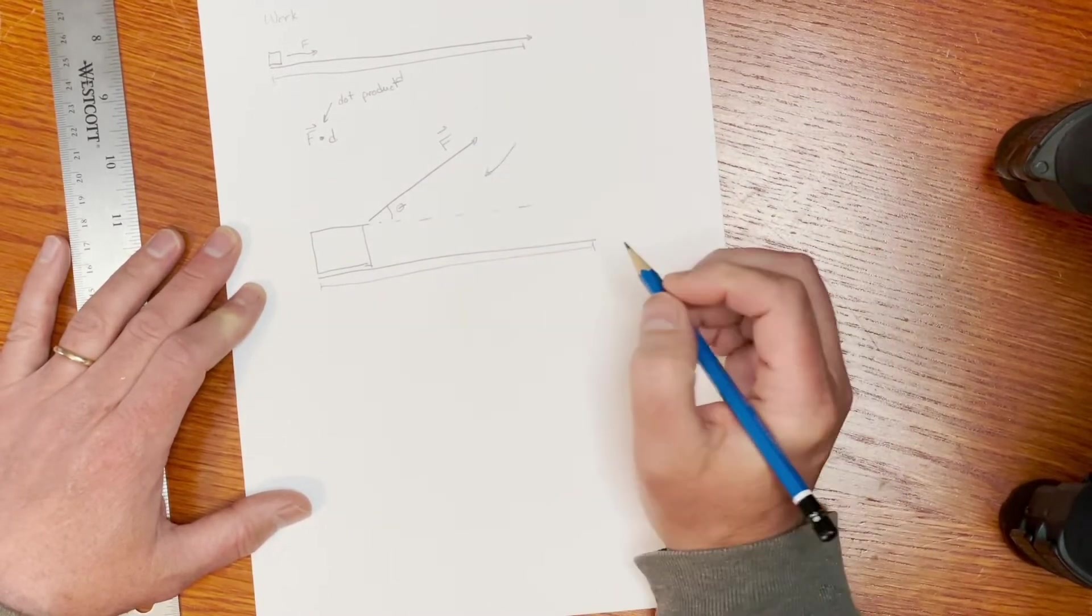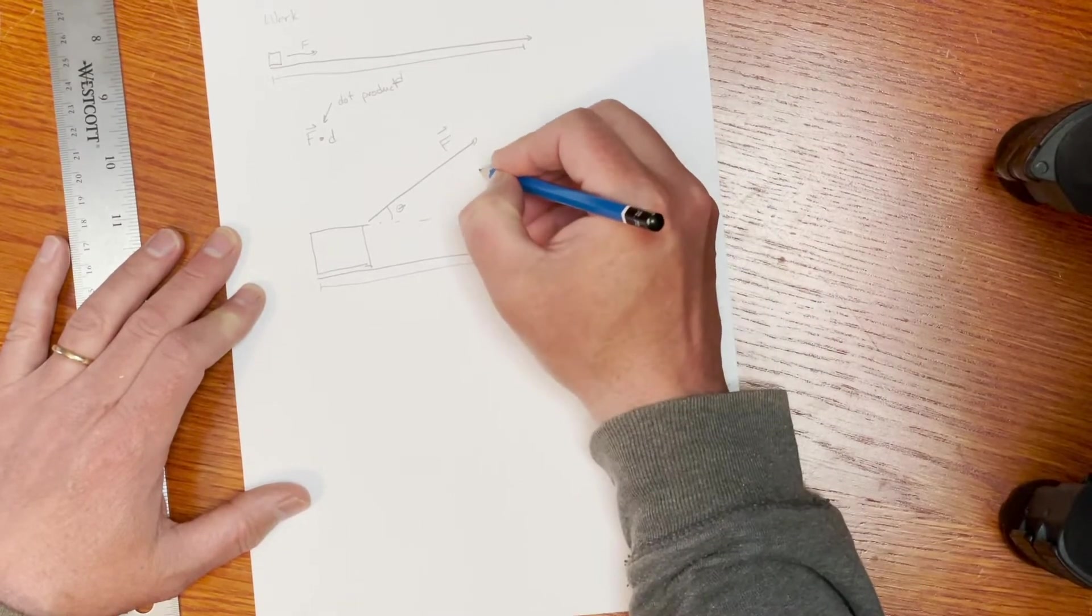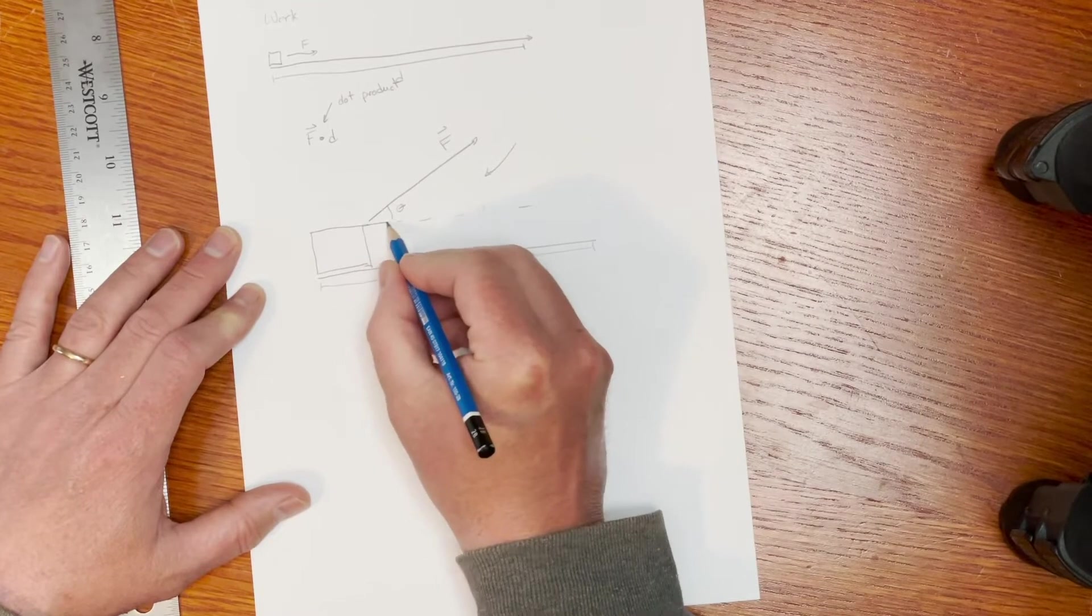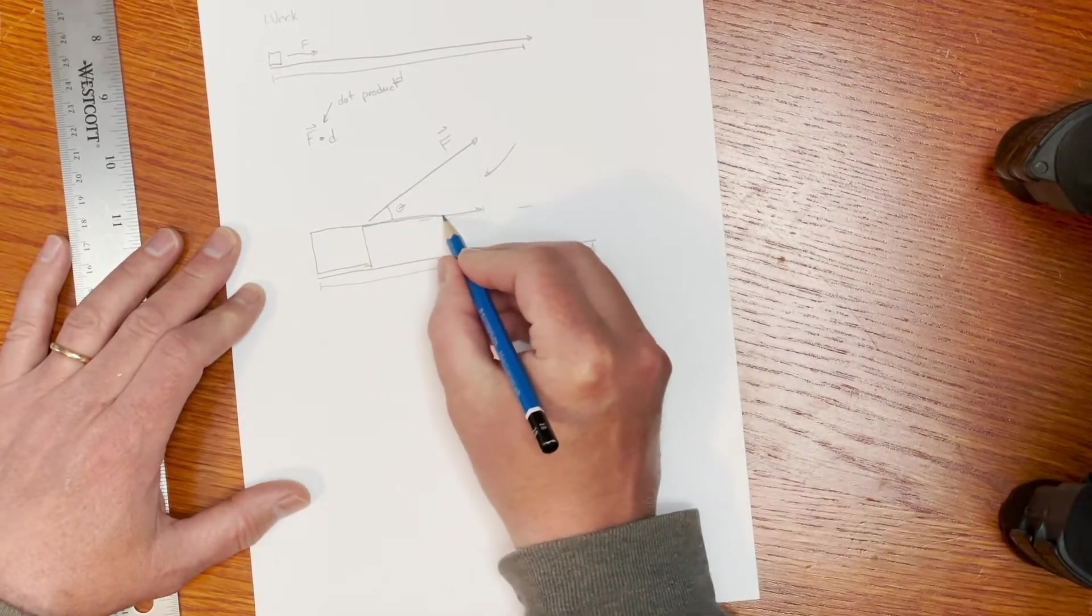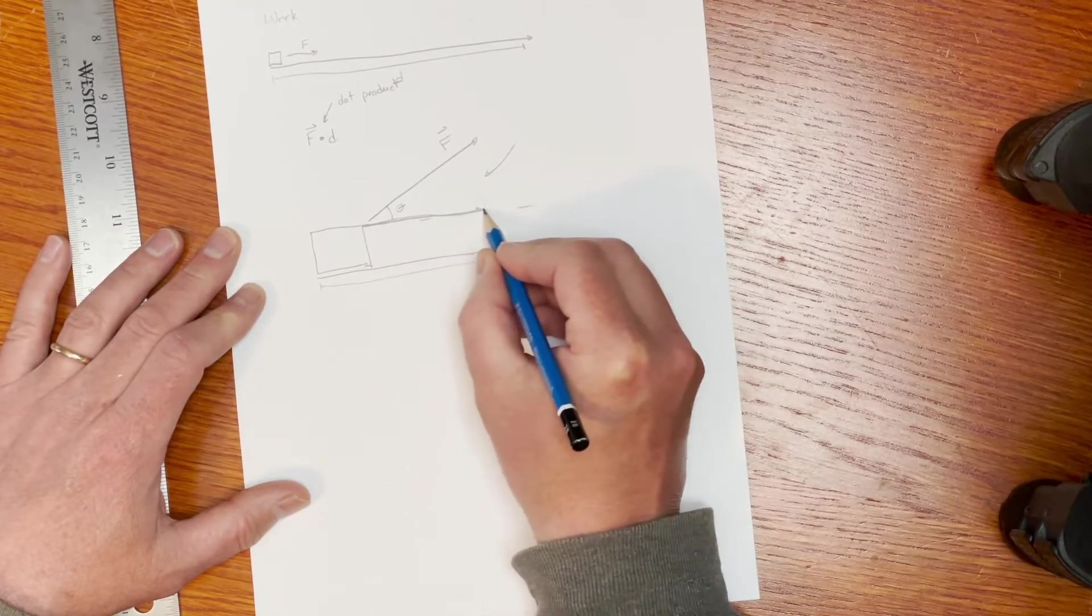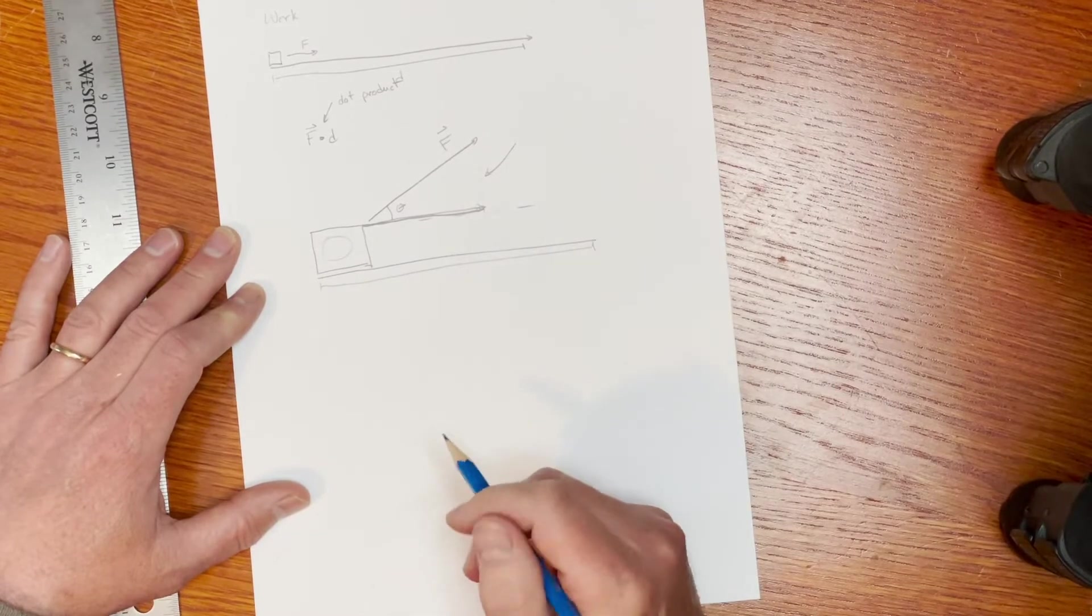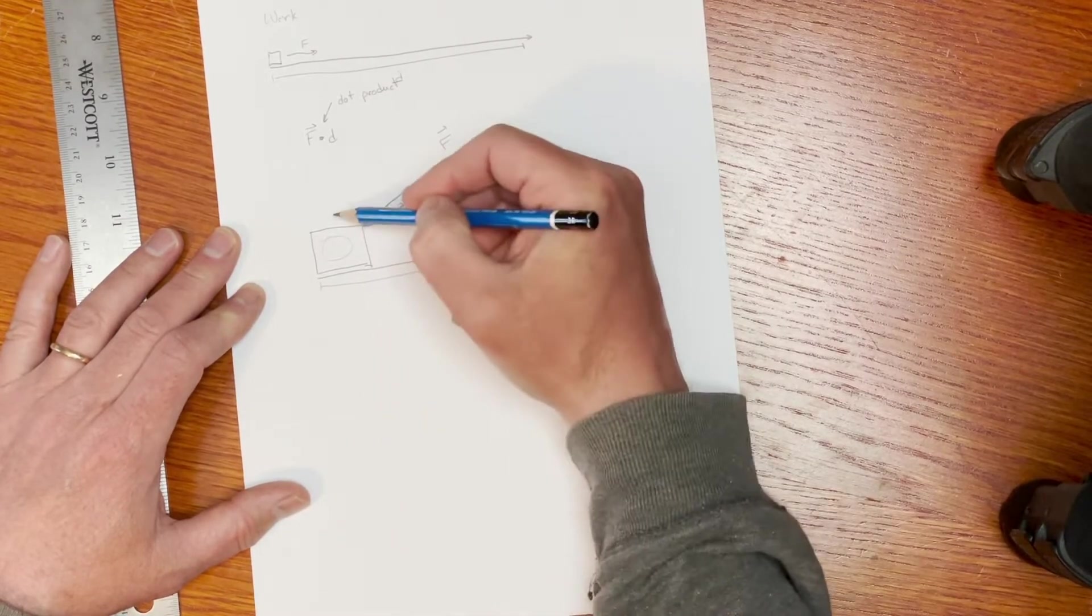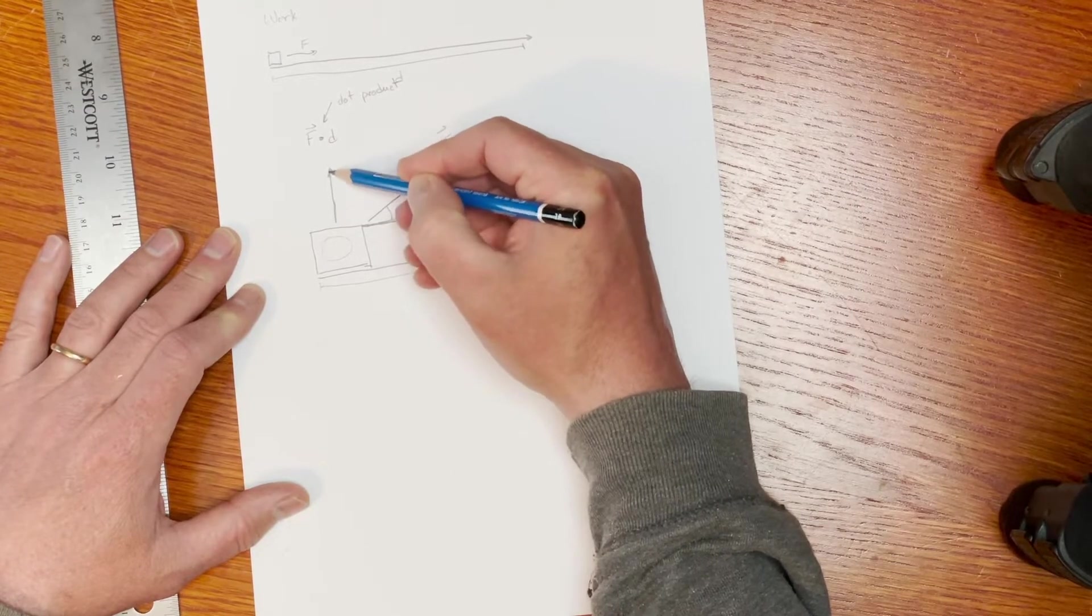And so the dot product comes in because that is the component that is being applied along the direction of motion, assuming this box isn't being lifted up. That's the only force that's causing this object to accelerate because the vertical component of the force isn't doing anything to accelerate the object.